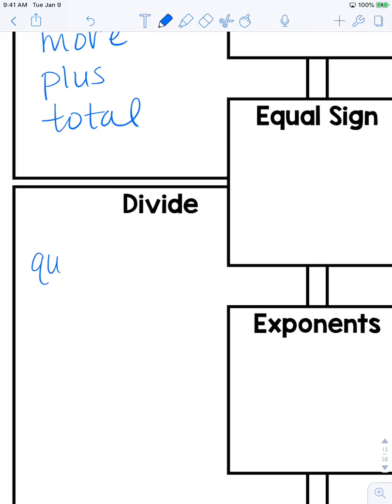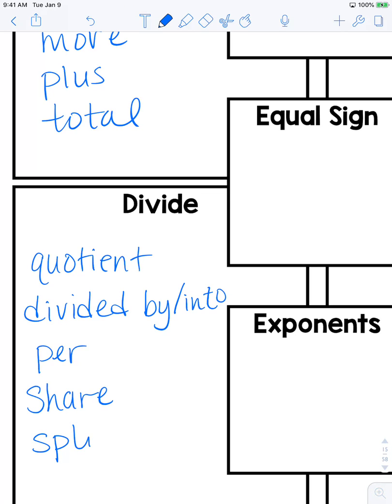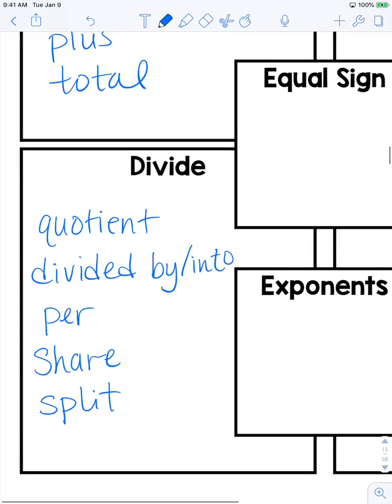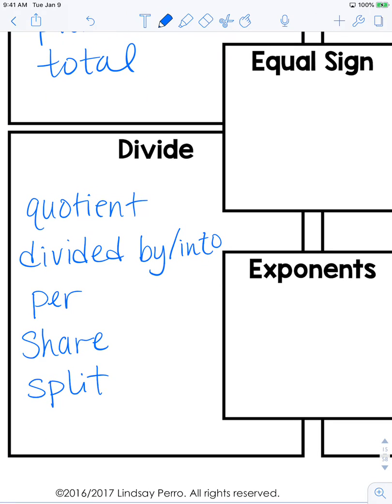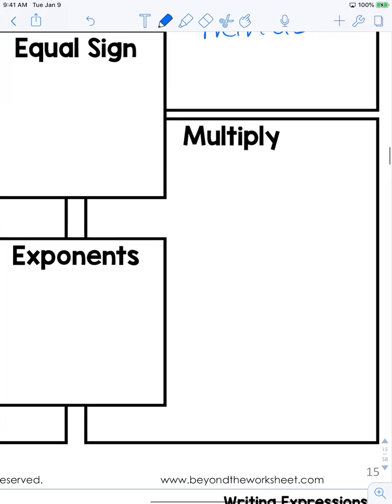Keywords that can signal division: quotient, divided - and you'll usually see this either saying divided by or divided into, per (per can also be multiplication), share or split. Okay, words that signal multiplication - I already said per, times, and product. There aren't as many words for multiplication, but you'll know it when you hear it.